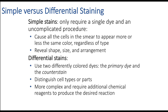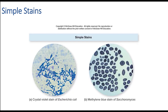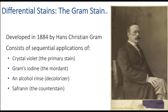Differential stains, like the Gram stain, use two different types: a primary stain and a counter stain. We want to differentiate because one binds to one type and not another. The Gram stain was developed in 1884. It uses crystal violet, which binds to the thick peptidoglycan layer in Gram positives. Gram's iodine acts as a mordant, holding the crystal violet in place for Gram positives. In Gram negatives, there is nothing for the crystal violet to bind to strongly.